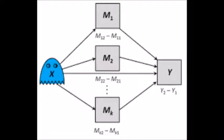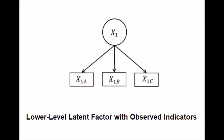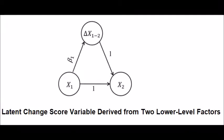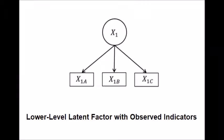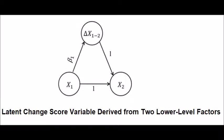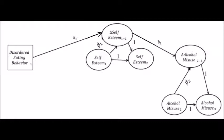Now I will explain latent difference score mediation using an example. The independent variable is disordered eating behavior, the mediating variable is self-esteem, and the outcome variable is alcohol misuse. We will collect data for the independent variable at time one, the mediating variable at time one and time two, and the outcome variable at time two and time three. This is how you construct your latent difference score mediation model in AMOS.